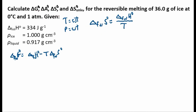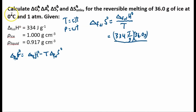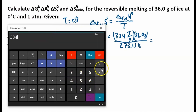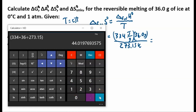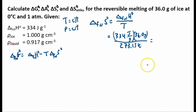Plugging in the values: ΔH_fus = 334 J/g. Entropy is an extensive function so we multiply by the amount of substance, 36.0 grams, and divide by the temperature in Kelvin, 273.15 K. That gives 334 × 36 / 273.15 = 44.0 J/K. Our grams cancel, leaving joules per Kelvin, which is the standard unit for entropy.